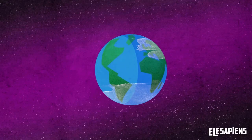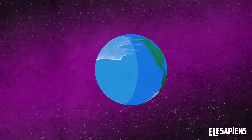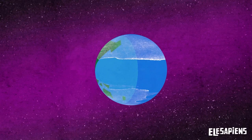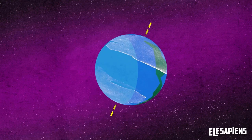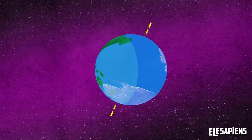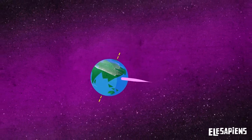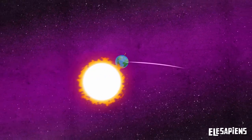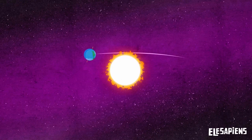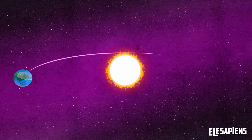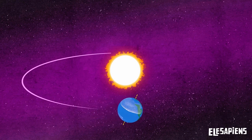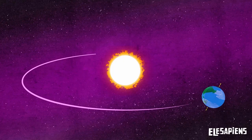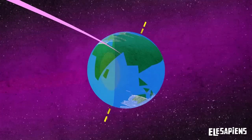The Earth's axis tilt is an imaginary line that goes through the planet's north pole to the south pole. The axis is inclined, and its inclination makes the sunlight reach the Earth at an angle that changes throughout the year. This is what produces the different seasons.